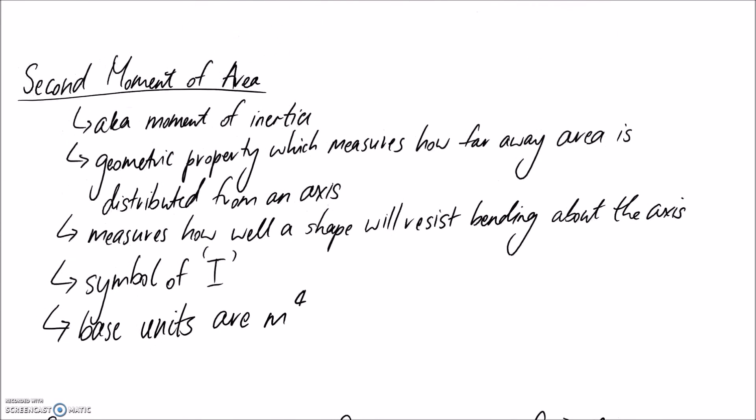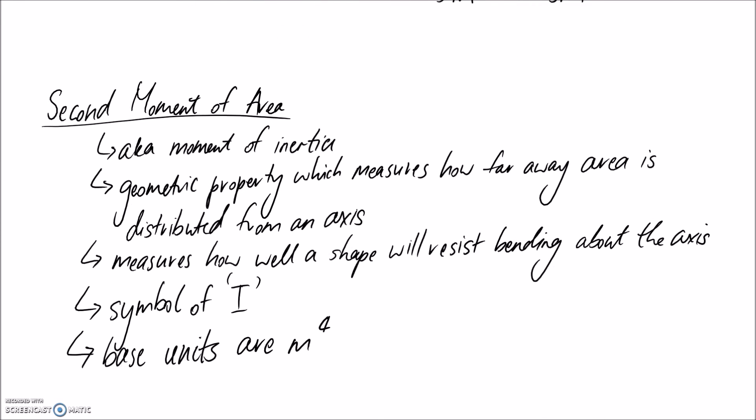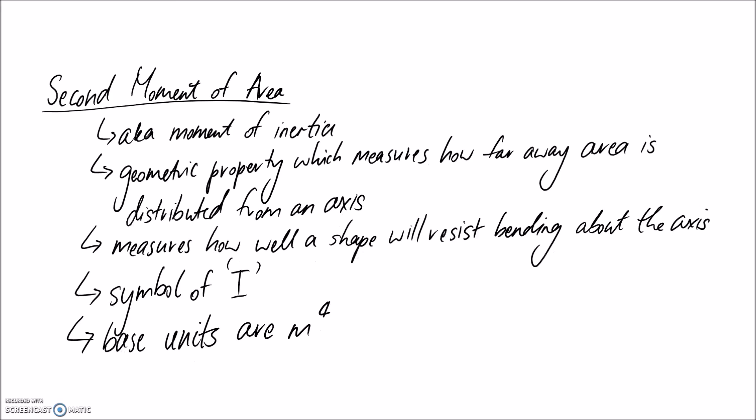So moving on to our last topic, which is second moment of area. So this has another name as well. It's known as the moment of inertia. Again, exactly the same thing, just got two different names. So what is it? Well, it's a geometric property, which measures how far away the area is distributed from a particular axis. So if area is quite far away, it attracts a higher second moment of area. Compared to if all of the area is very, very close to the axis, it's not going to be as much. So why do we care? Well, the reason is it measures how well a shape will resist bending about that particular axis that you've measured your second moment of area about. And this is going to come back in a couple of weeks where we start looking at the bending stress.